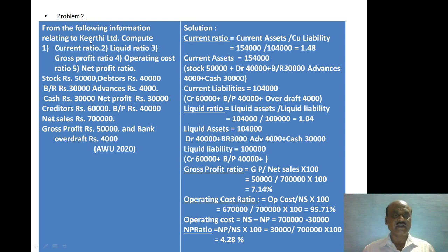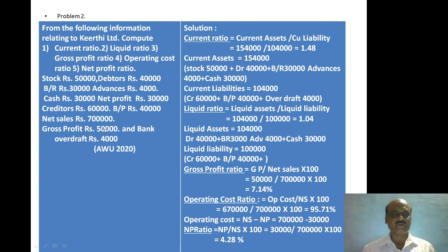From the following information relating to Keyrtli Limited, compute current ratio, liquid ratio, gross profit ratio, operating ratio, and net profit ratio. Data given: stock Rs. 50,000, debtors Rs. 40,000, bills receivable Rs. 30,000, advances Rs. 4,000, cash Rs. 30,000, net profit Rs. 30,000, creditors Rs. 60,000, bills payable Rs. 40,000, net sales Rs. 7 lakh, gross profit Rs. 50,000, bank overdraft Rs. 4,000.